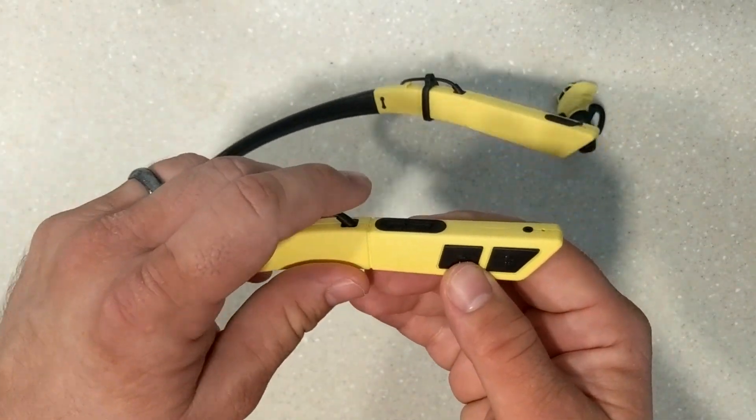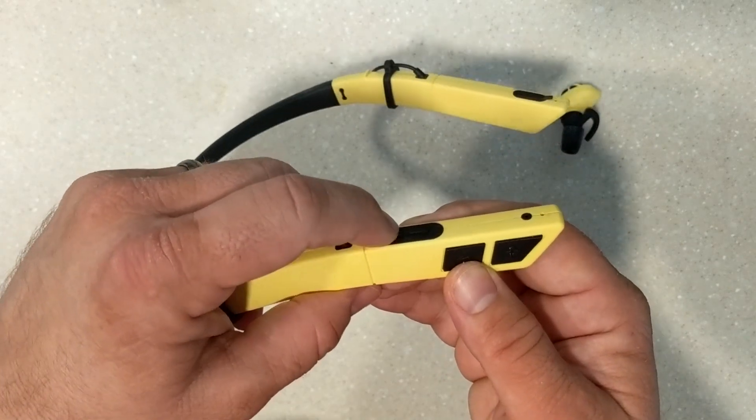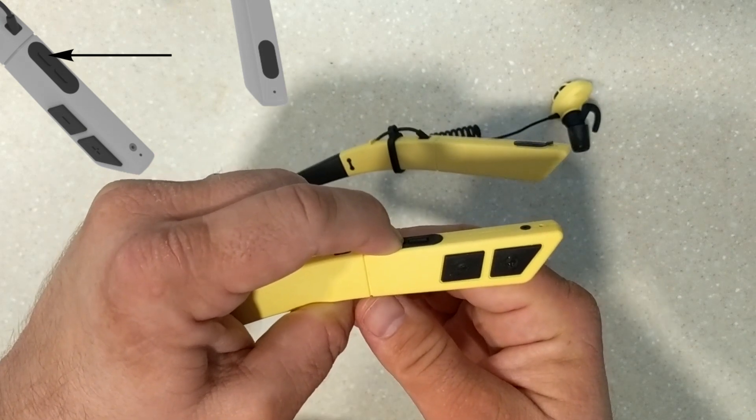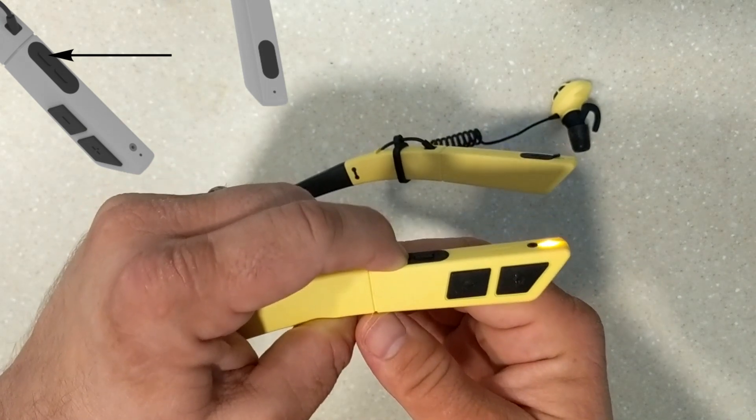To enter Bluetooth pairing mode, power on the unit by pressing and holding the multi-function button. Power on. After the unit powers up,